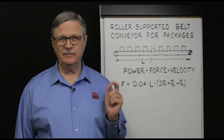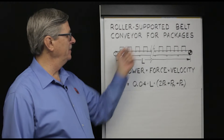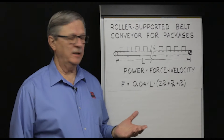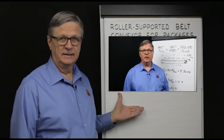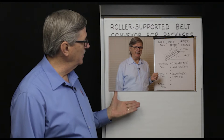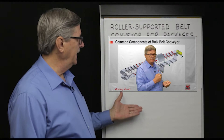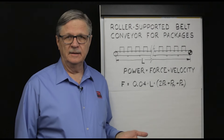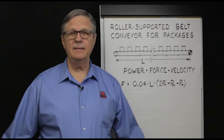This video will present how to calculate required belt pull and required power to move discrete packages on a roller-supported belt conveyor. This video complements videos already posted on our YouTube channel and website, which cover how to calculate belt pull and required power to move packages on a horizontal slider bed, an inclined slider bed, and how to calculate belt tensions and required power on a bulk handling conveyor. You can watch these by clicking the link in the upper right-hand corner of the monitor.